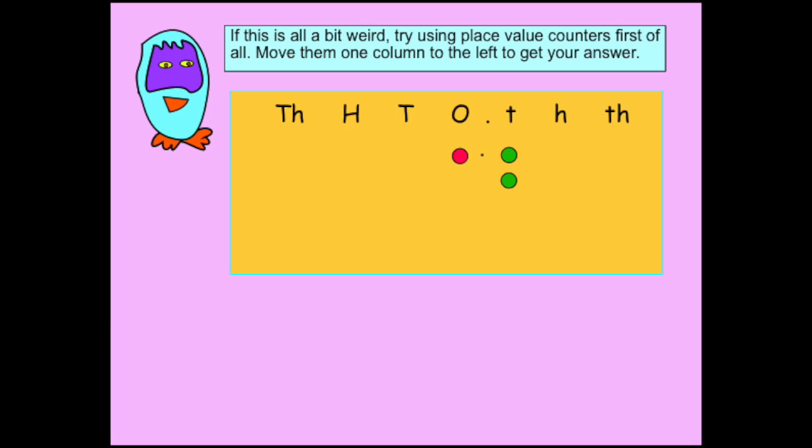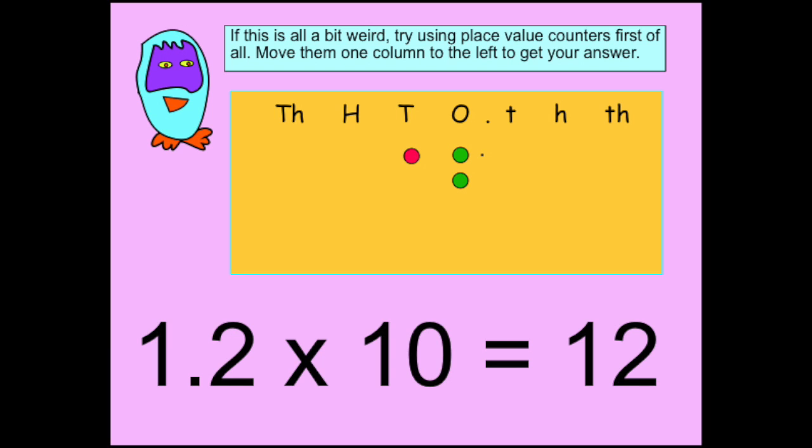Here we have the number 1.2 shown with place value counters. Once again, each counter moves one place to the left and we end up with an answer of 12.